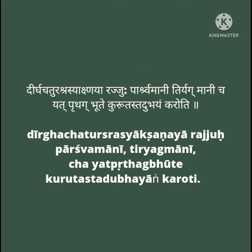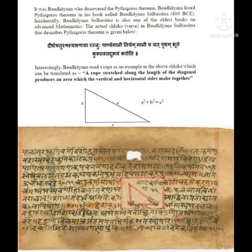He explained the Pythagorean theorem as follows: a rope stretched along the length of the diagonal produces an area which the vertical and horizontal sides make together.